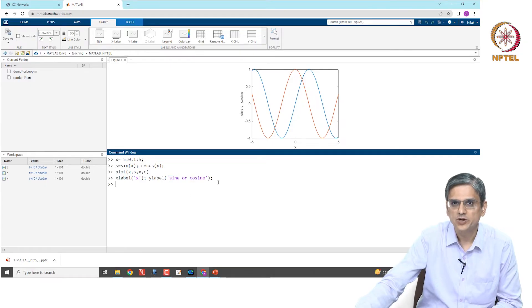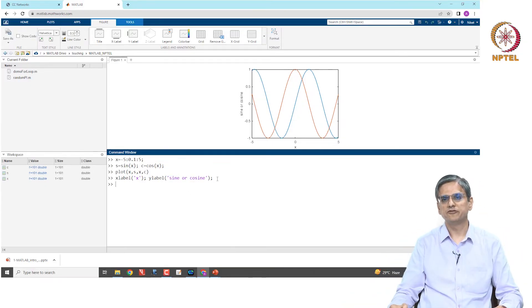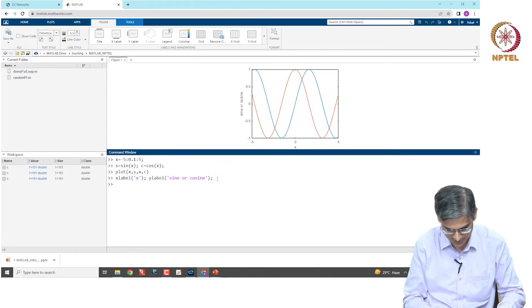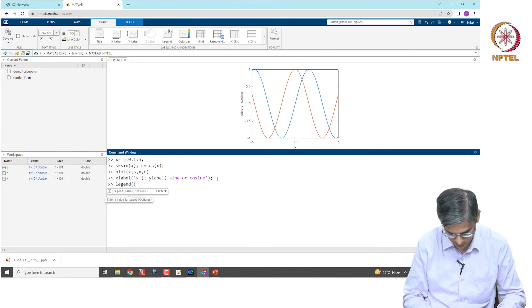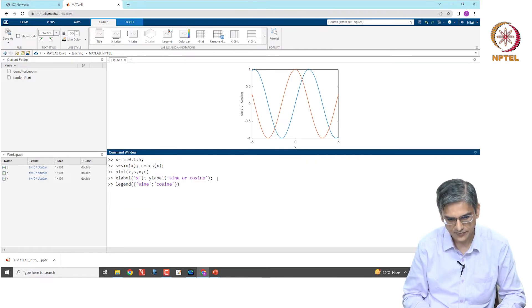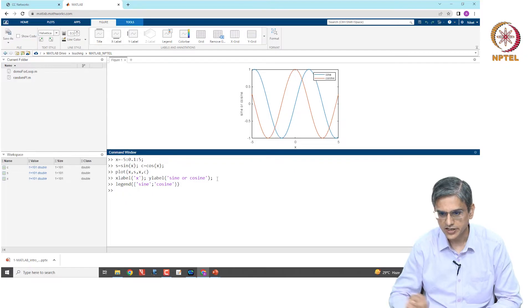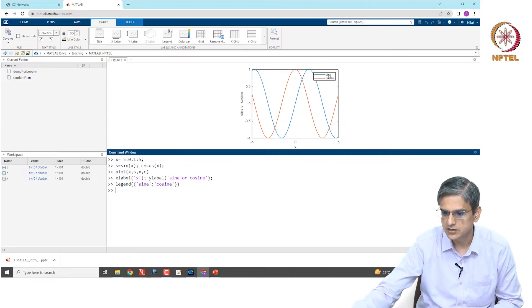However, now, if we have multiple things that we want to give, for example, in figure legends, in that case, we are going to use cell arrays. And I will show you how to do that: legend, sin, cosine. And this will give you the legend as sin and cosine.